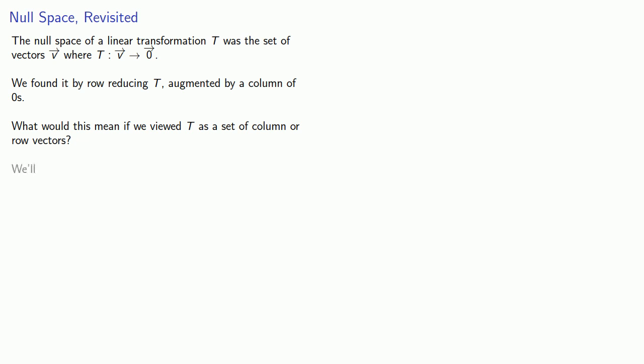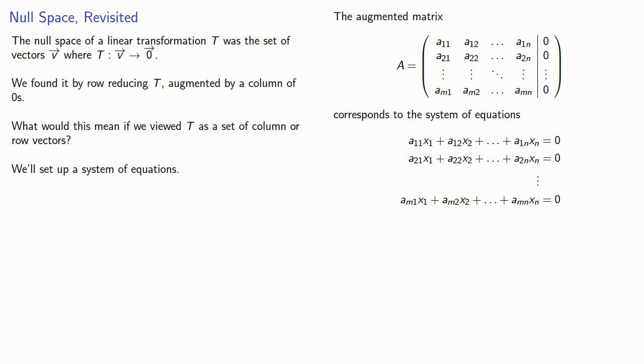Well to answer that question we'll set up a system of equations. So if we consider our augmented matrix, it corresponds to the system of equations. But the system of equations is exactly what we need to solve if we are looking for linear combinations of our vectors equal to the zero vector.